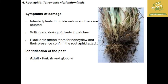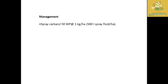Another important pest in ragi is the root aphid, with scientific name Tetraneura nigriabdominalis. Damage symptoms include infested plants turning pale and becoming stunted, wilting or drying of plants in patches. Black ants attending the plants for honeydew secretion confirm the presence of root aphid attack in ragi. For identification, the adult is pinkish and globular in color.